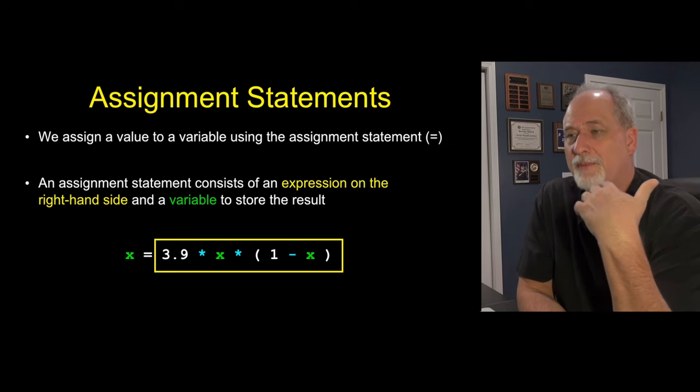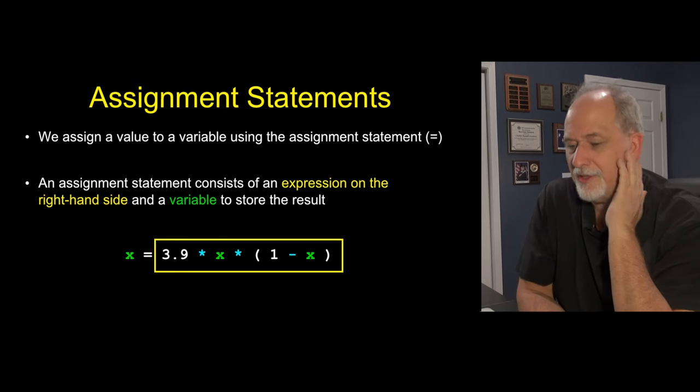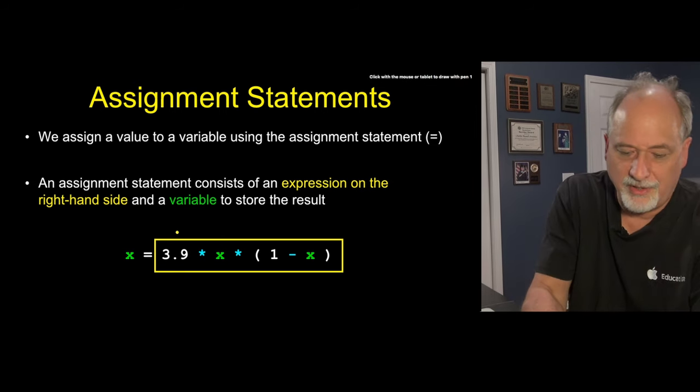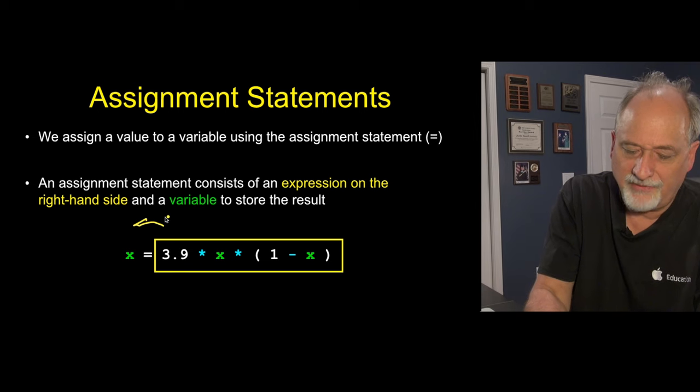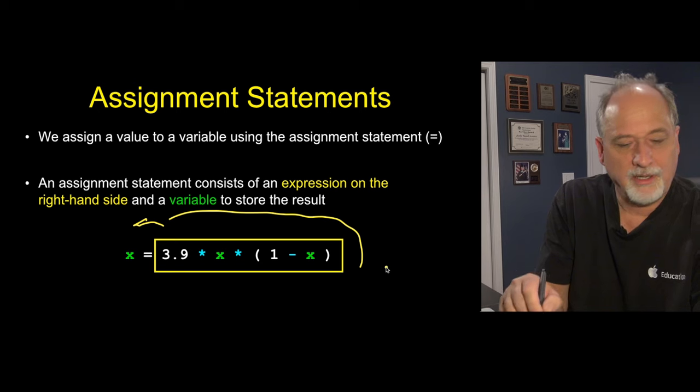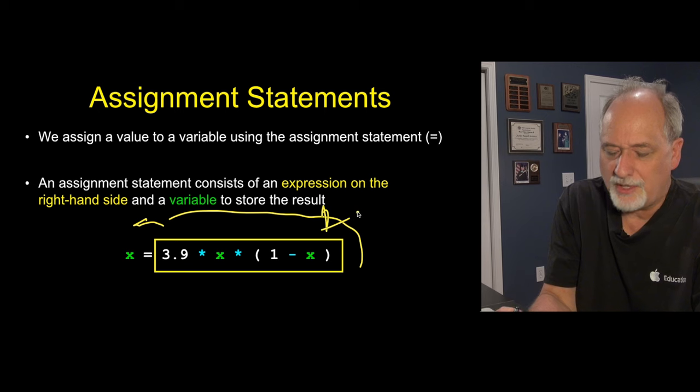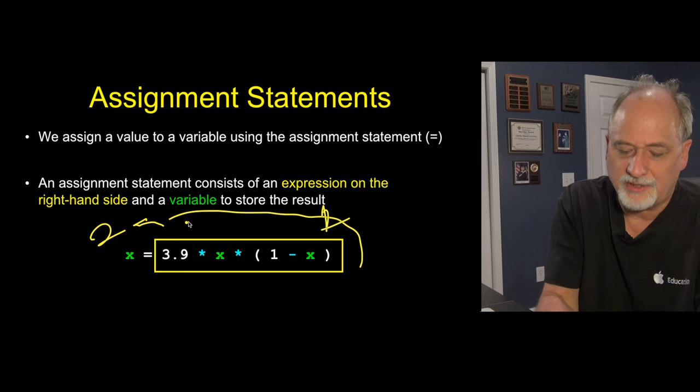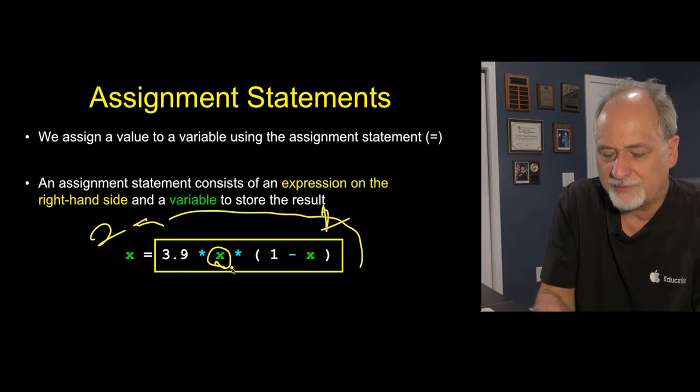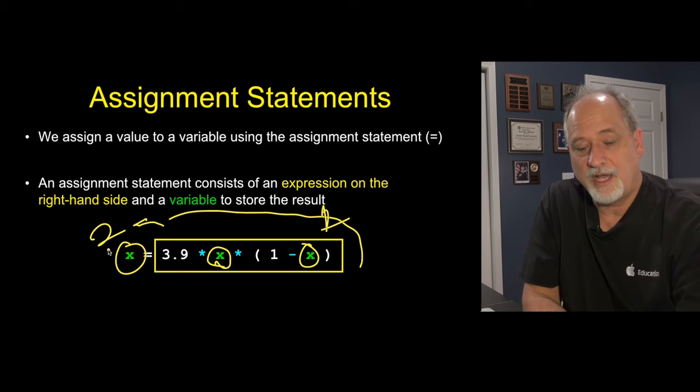Okay, so an assignment statement, you have to really get your head around the notion that it has this arrow nature. And that it evaluates this entire right-hand side before we change the left-hand side. And so you can think of this sort of as, at time step one, it does this. And then at time step two, it does the copy. And that's how you can have something like x on both sides of an assignment statement.